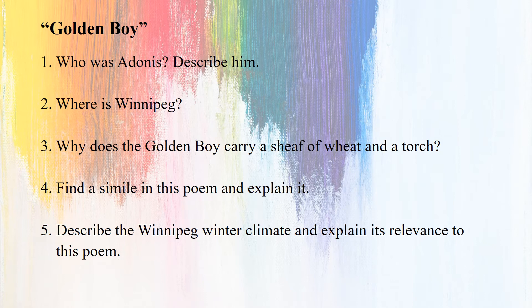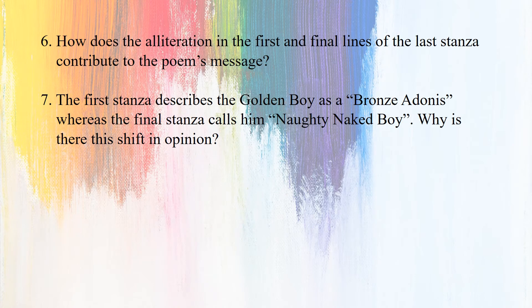Golden Boy. Question 1: Who is Adonis? Describe him. Question 2: Where is Winnipeg? Question 3: Why does the Golden Boy carry a sheaf of wheat and a torch? Question 4: Find a simile in this poem and explain it. Question 5: Describe the Winnipeg winter climate and explain its relevance to this poem. Question 6: How does the alliteration in the first and final lines of the last stanza contribute to the poem's message? Question 7: The first stanza describes the Golden Boy as a bronze Adonis, whereas the final stanza calls him naughty naked boy. Why is there this shift in opinion?